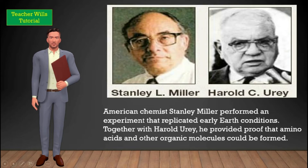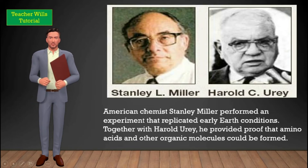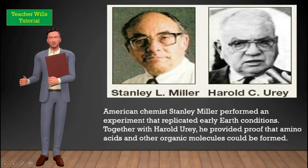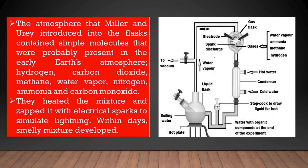American chemist Stanley Miller performed an experiment that replicated early Earth conditions. Together with Harold Urey, he provided proof that amino acids and other organic molecules could be formed. The atmosphere that Miller and Urey introduced into the flasks contained simple molecules that were probably present in the early Earth's atmosphere: hydrogen, carbon dioxide, methane, water vapor, nitrogen, ammonia, and carbon monoxide.